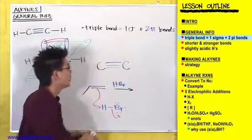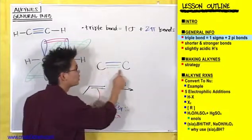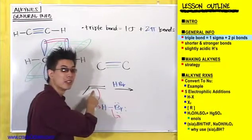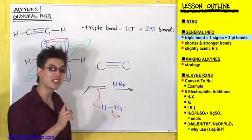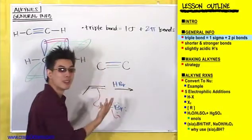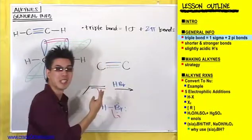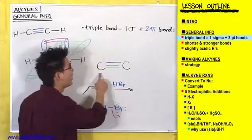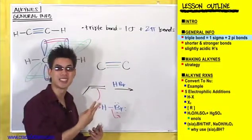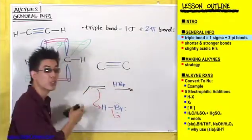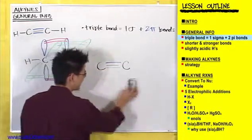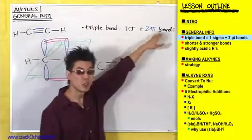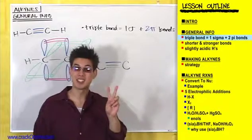In a triple bond, you have a sigma bond that is very difficult to break, and two pi bonds that can be broken. Alkenes had one pi bond, allowing one addition reaction. A triple bond has two pi bonds, so it can do two addition reactions. You'll find out all about this when we go over the reactions that alkynes undergo. It's important to understand that a triple bond has two pi bonds because those two pi bonds can be broken to do two consecutive electrophilic additions.